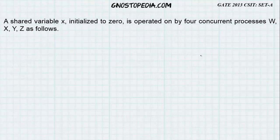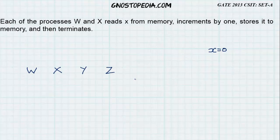A shared variable x is initialized to 0. So I have written x equal to 0. It is operated on by four concurrent processes W, X, Y and Z as follows. Now each of the processes W and X reads x from memory. So from this we know that x is in the memory or the RAM. So I can write it like this. I can denote it by a box.